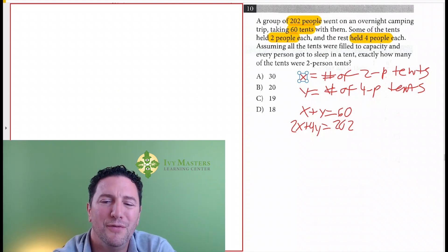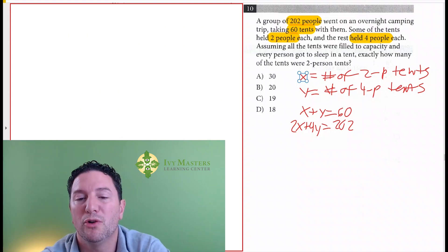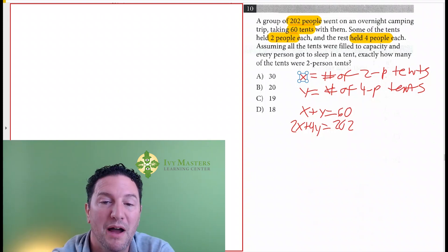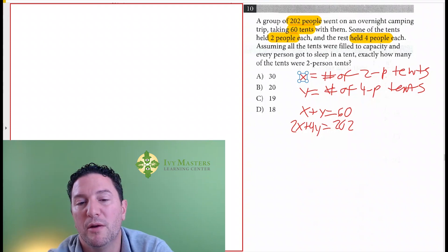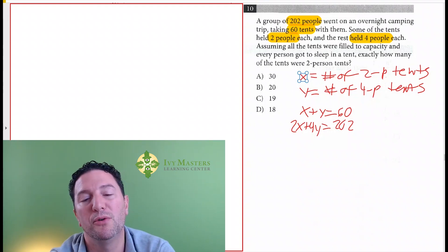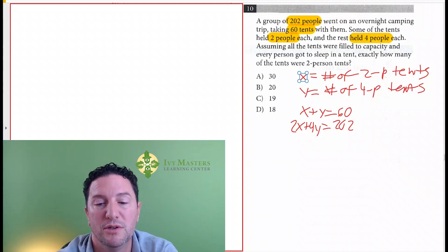Now, if we're looking for the total number of people, then we've got to multiply the number of two-people tents by two people, and then multiply the number of four-people tents by four people in order to get our total number of people, which would be 202.